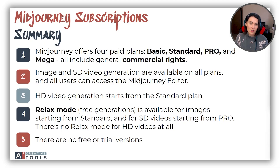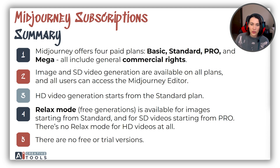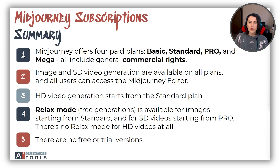To sum up, here are the key takeaways about MidJourney subscription plans. MidJourney offers four paid plans: Basic, Standard, Pro, and Mega — all include general commercial rights. Image and SD video generation are available on all plans, as well as the MidJourney editor. HD video generation starts with the Standard plan. Relax mode (free generation) is available for images starting from the Standard plan, and for SD videos starting from Pro. There is no Relax mode for HD videos at all, and there are no free or trial versions.